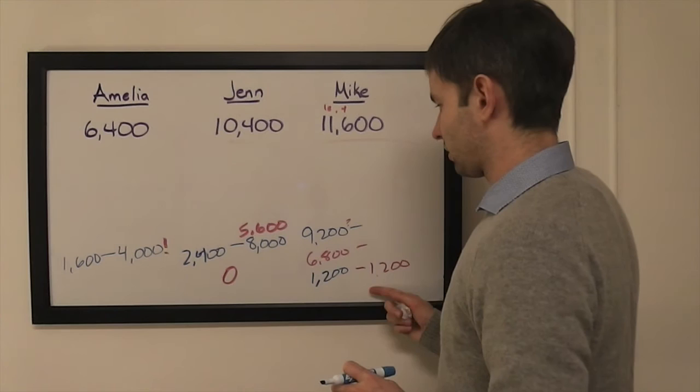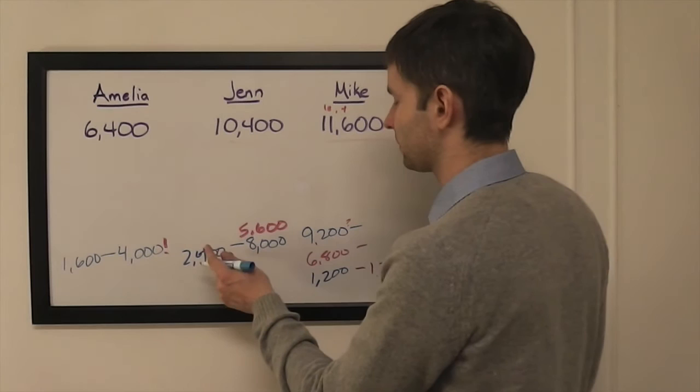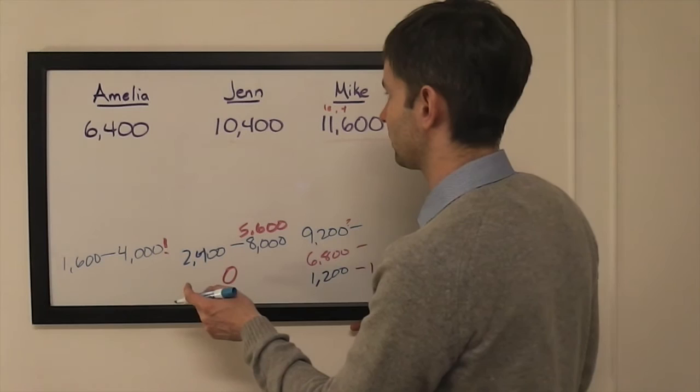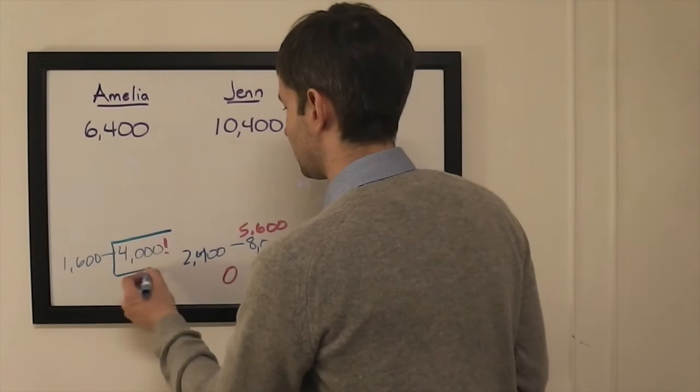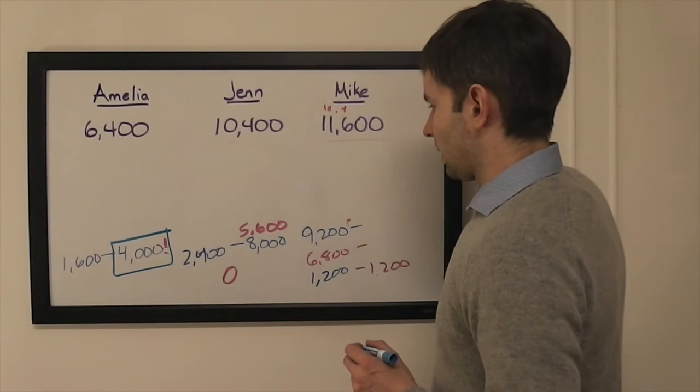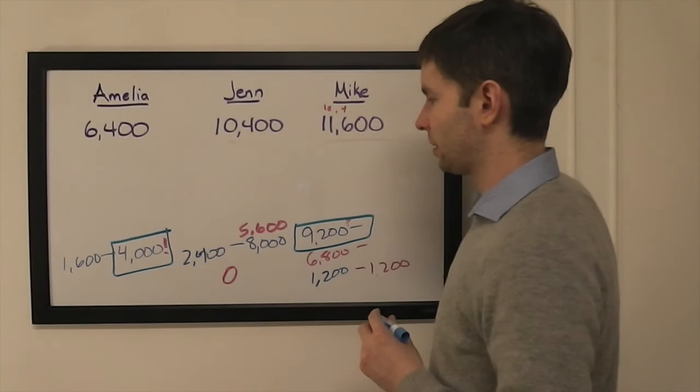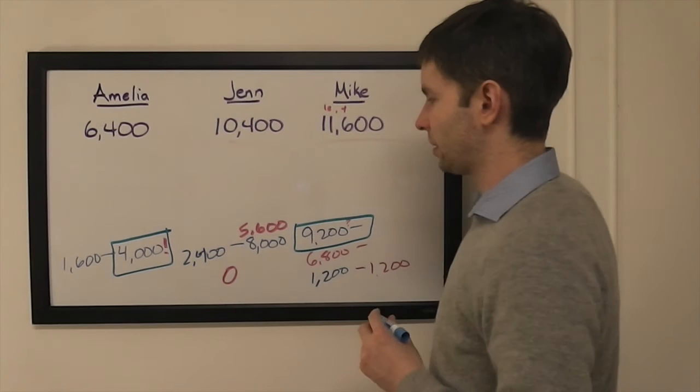Anything else here? I think that's about it. Now we'll look at the zero wagers. Mike and Jen separated by 1,200. So here's that 1,200 amount there for him. 1,200, 2,400 here. Amelia and Jen are separated by 4,000. So I'm going to hope that Amelia goes for 4,000 even.